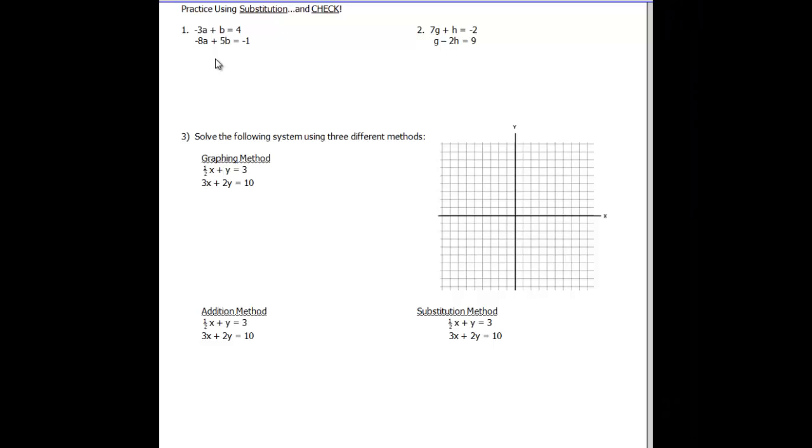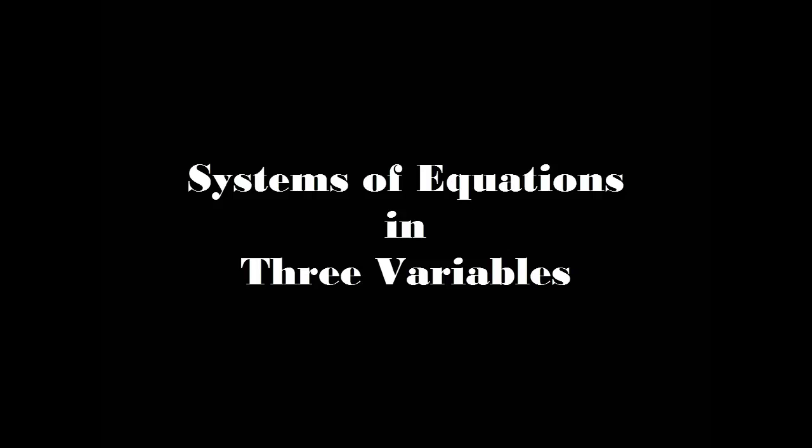So very briefly in the first one I got A equals negative 3 and B equals negative 5 and on the second problem G equals 1/3 for all you fraction lovers out there and H equals negative 4 and 1/3. We will work on this section in class tomorrow so don't worry about that. But what I'd like you to do now is take a look at the next section of your notes which talks about system of equations in three variables.